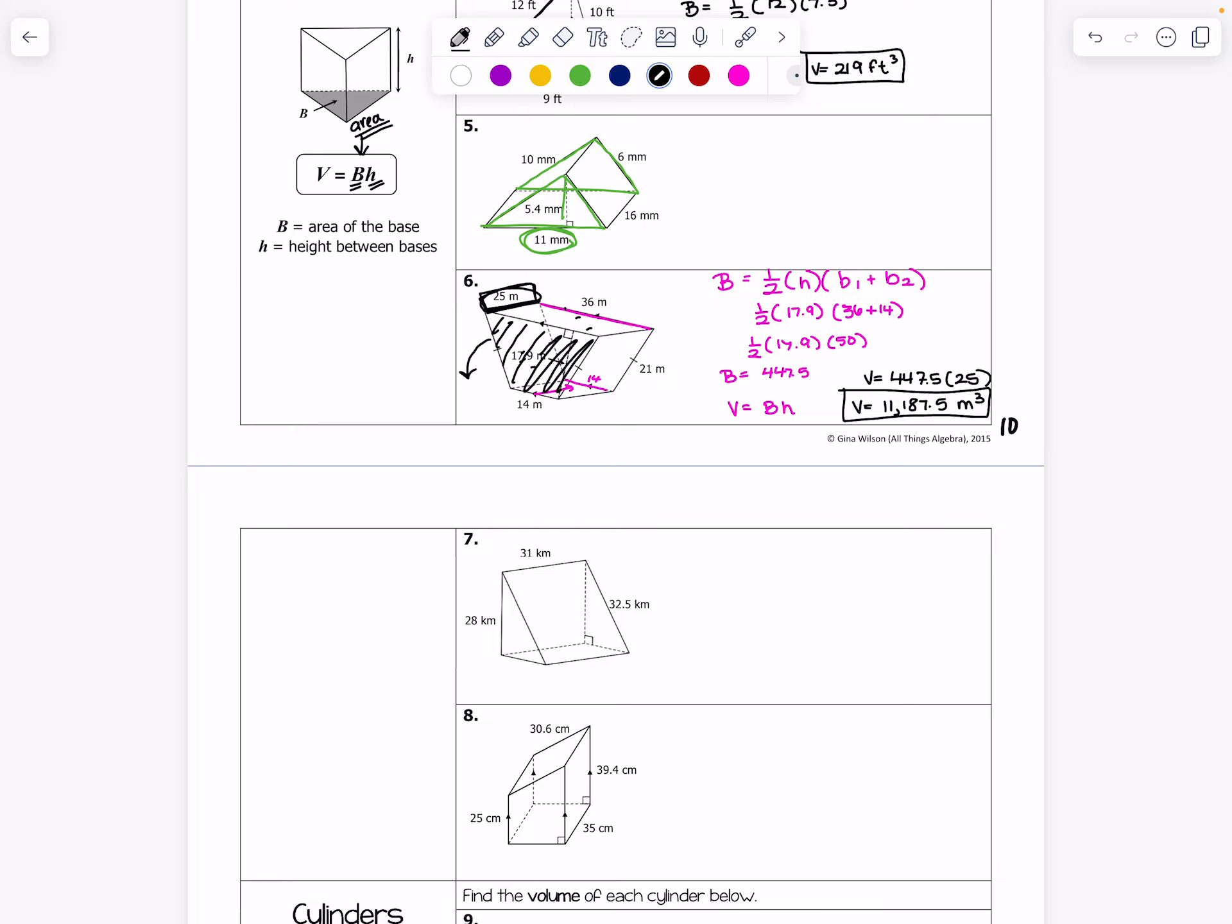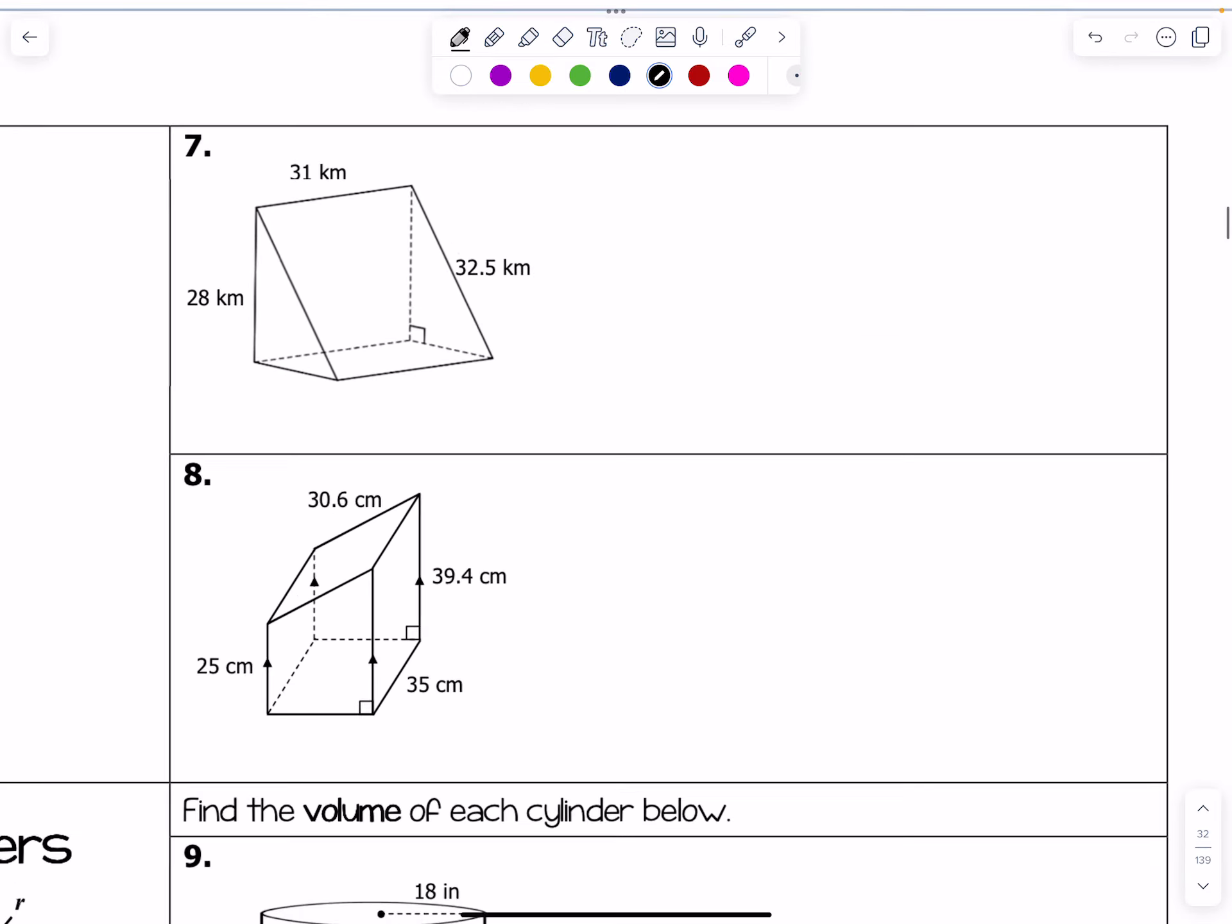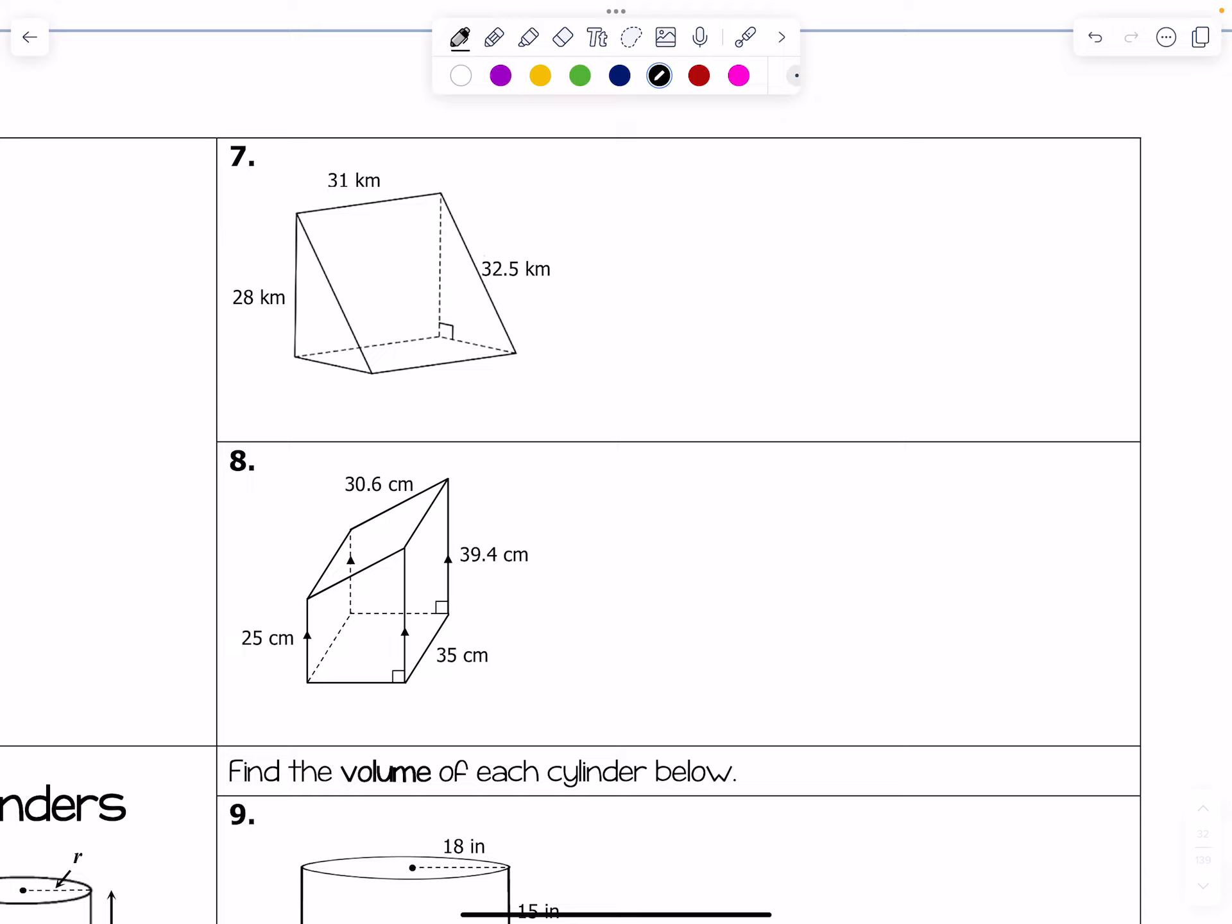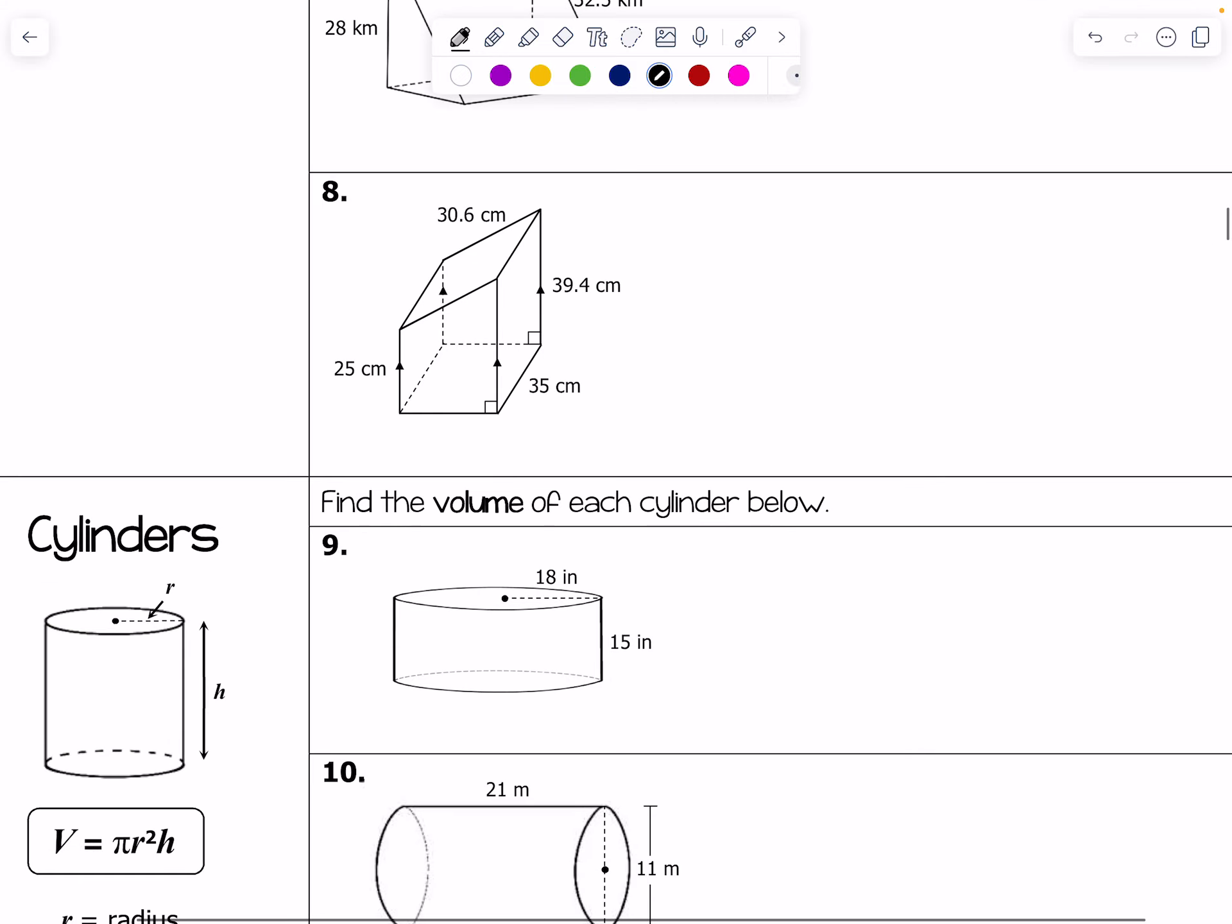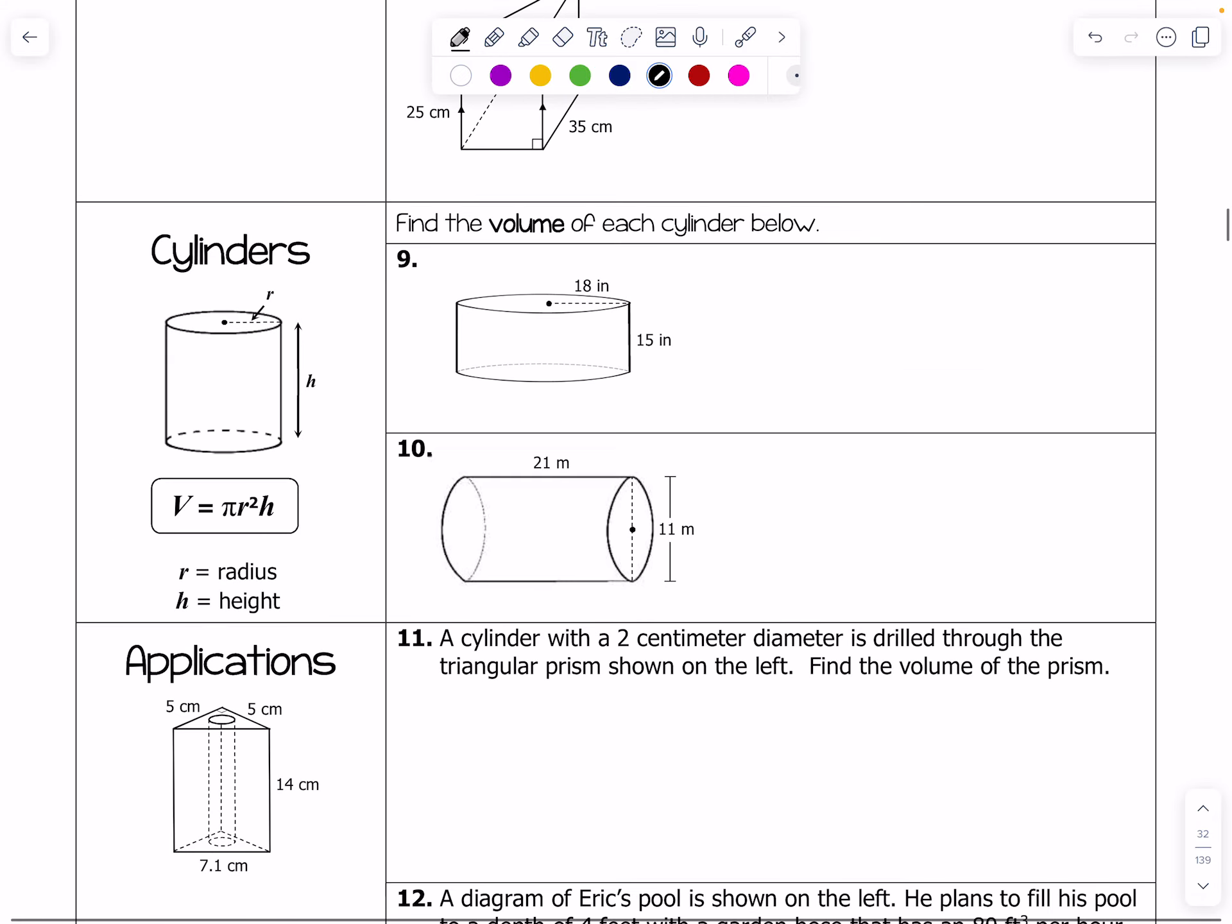All right, you'll see, noticing actually, that a lot of these figures repeat, so we're just like adding on to our knowledge here. 7 is not that difficult, there's no trick. 8 is another trapezoid one, just like we did. So let's move into volume of cylinders.